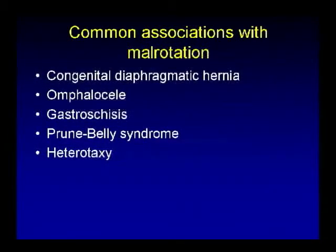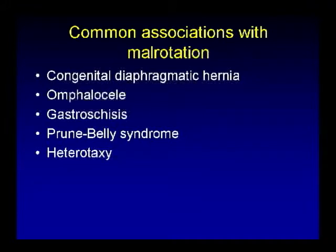Malrotation can be isolated, but there are conditions with strong association with it. Common among them is congenital diaphragmatic hernia, which has a very high association with malrotation. Anterior abdominal wall abnormalities like omphalocele, gastroschisis, and prune-belly syndrome have high association with malrotation, as do situs abnormalities like heterotaxia.